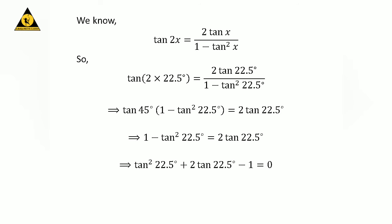Here, I have shifted 2 times tangent of 22.5 degrees from the right hand side to the left hand side and then multiplied the whole equation by minus 1. So we get: square of tangent of 22.5 degrees plus 2 times tangent of 22.5 degrees minus 1 is equal to 0.